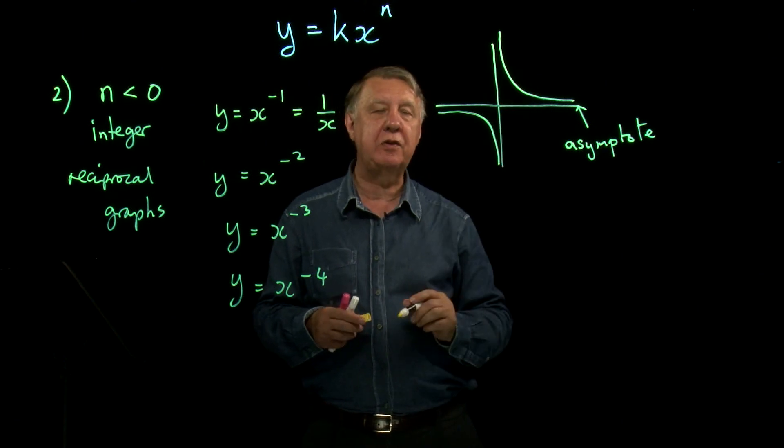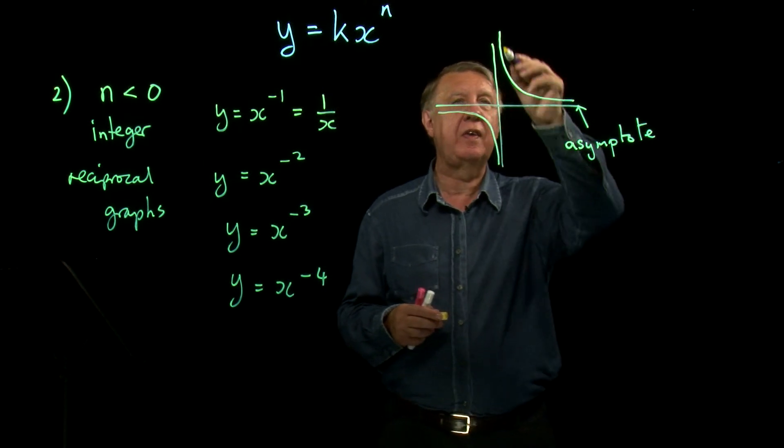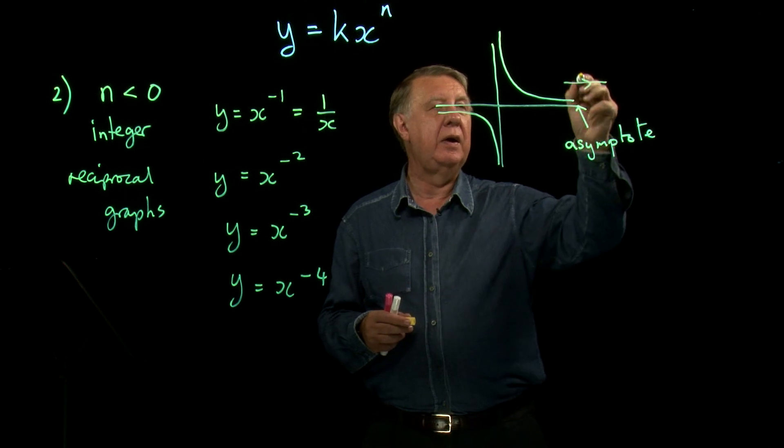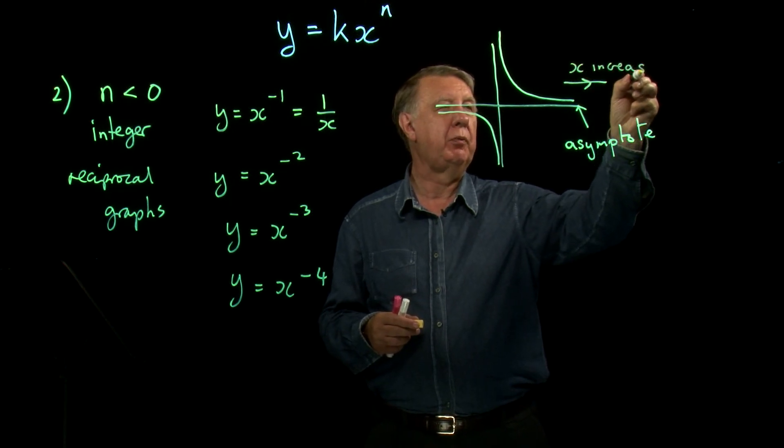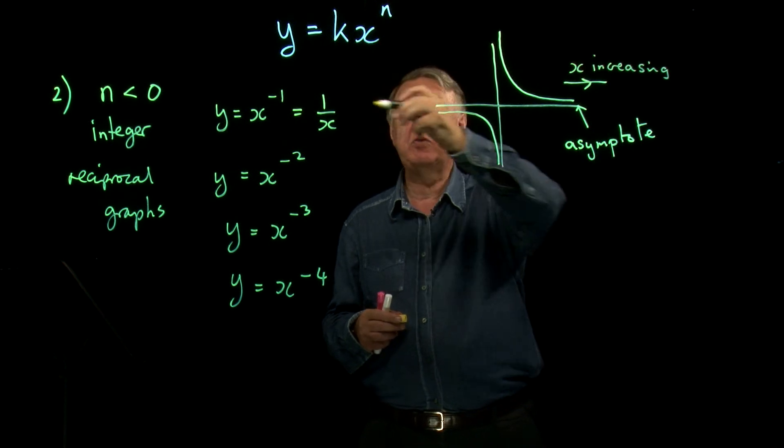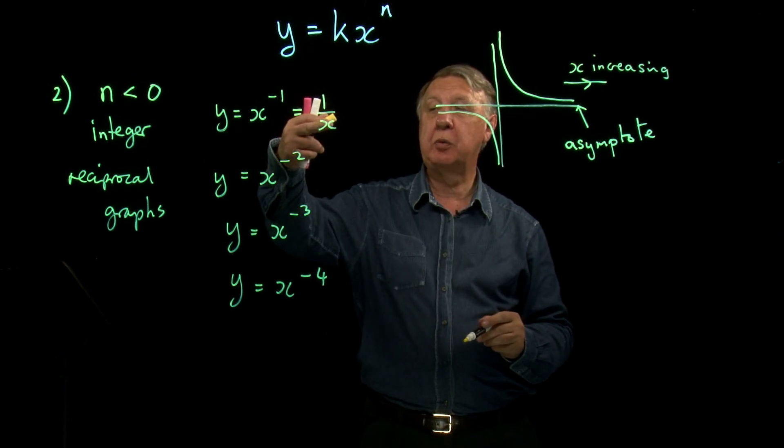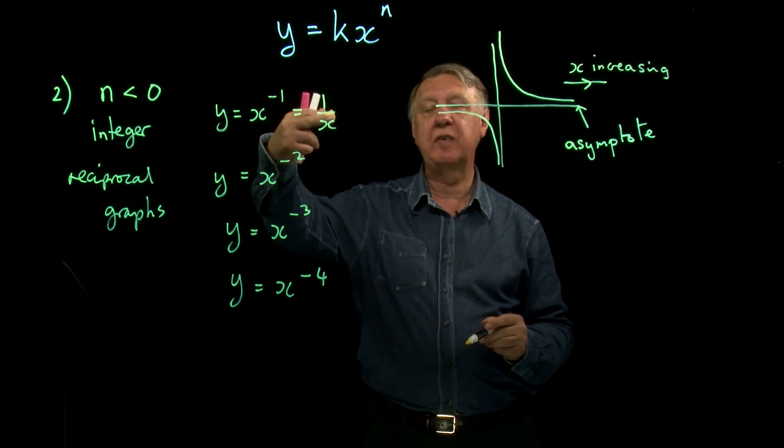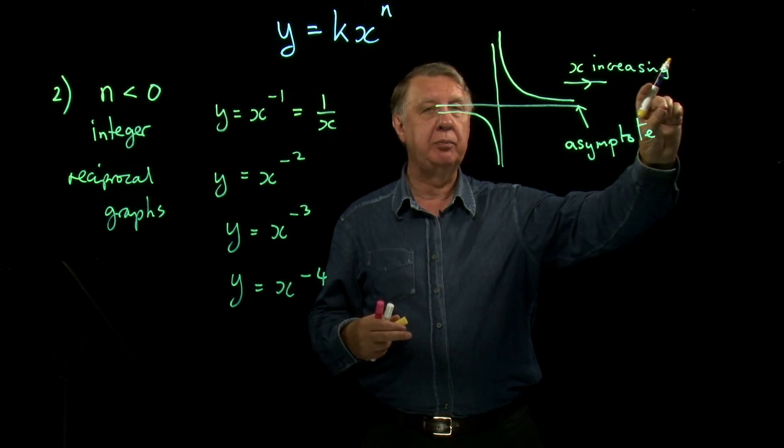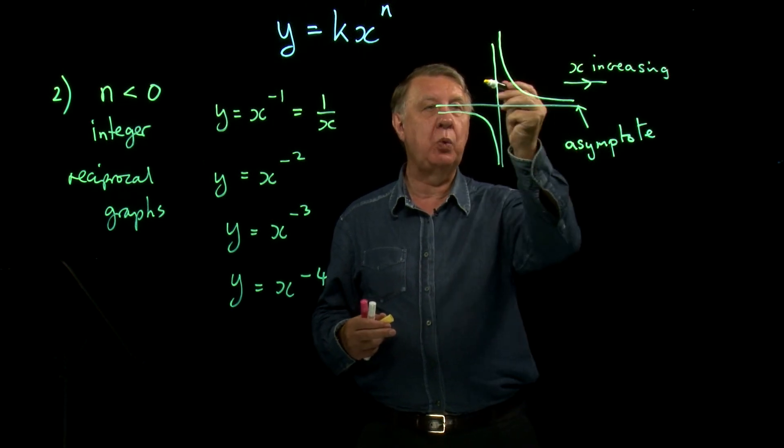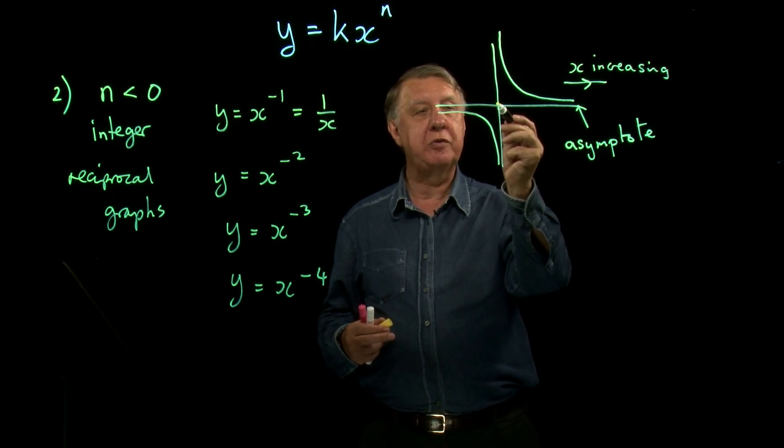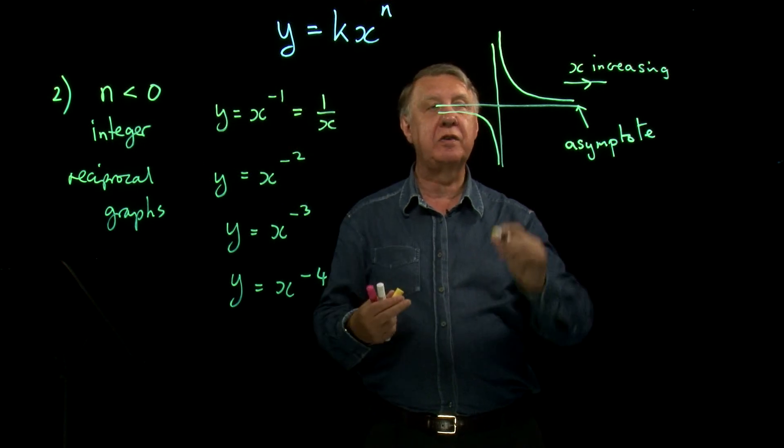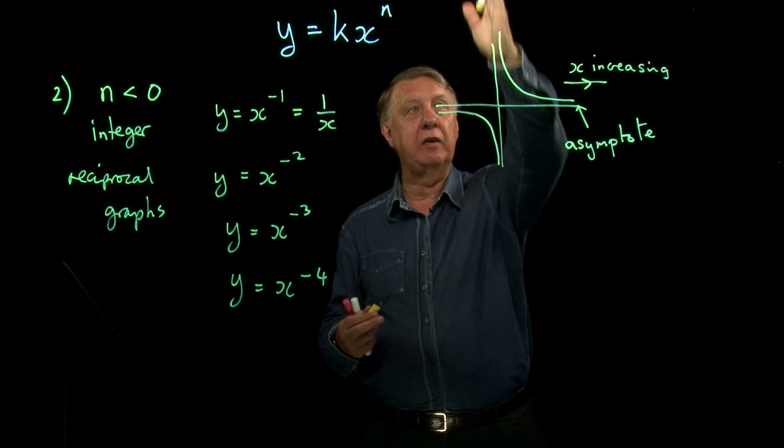That would be your 1 over x graph. And the reason it's that way round is because if x gets larger and larger, so as we're going this way, x is increasing and of course because it's 1 over x in the equation, 1 over a bigger number, the answer is getting smaller and smaller. So 1 over 10, 1 over 100, 1 over 1000, y is getting smaller and smaller. Whereas this way, x is getting smaller and smaller here and so 1 over 0.1, 1 over 0.01, the answer gets bigger and bigger and so the graph whizzes off up there.